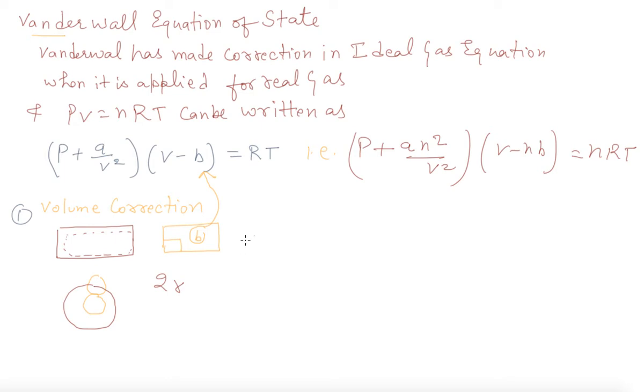So B stands for is a constant and simple words B is non-compressible volume. Non-compressible volume and we can show by this one.